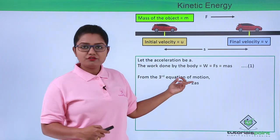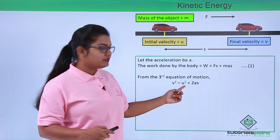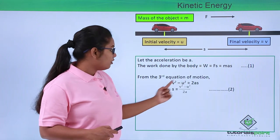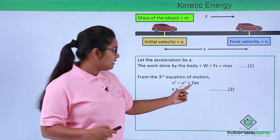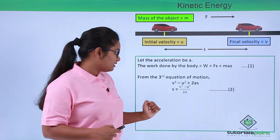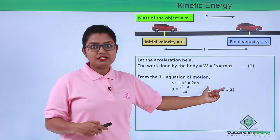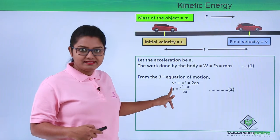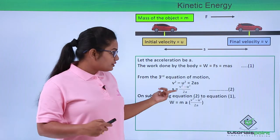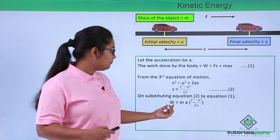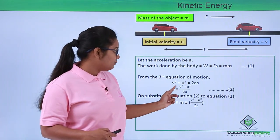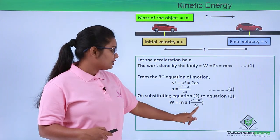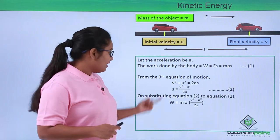We will also make use of the third equation of motion, which is v² − u² = 2as. From this expression we can find the value of the displacement S, which turns out to be S = (v² − u²) / 2a. Let us take this as equation number 2. We are now going to substitute this value of S into equation 1.